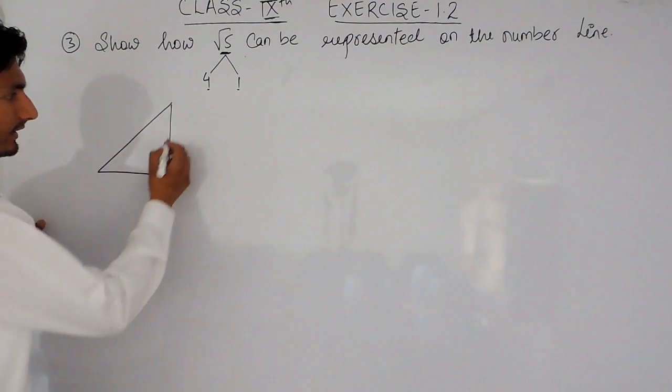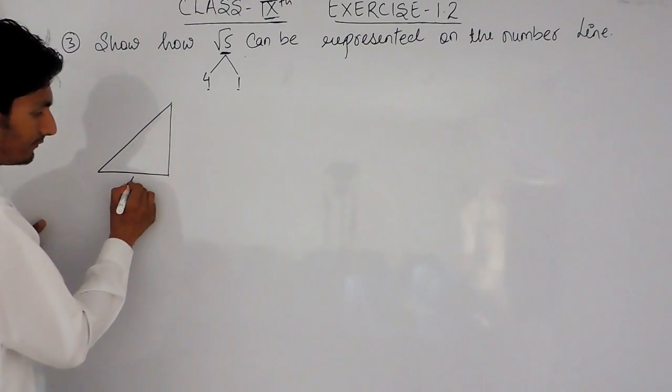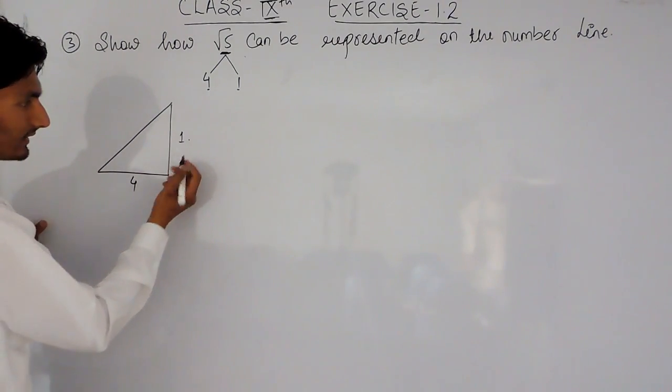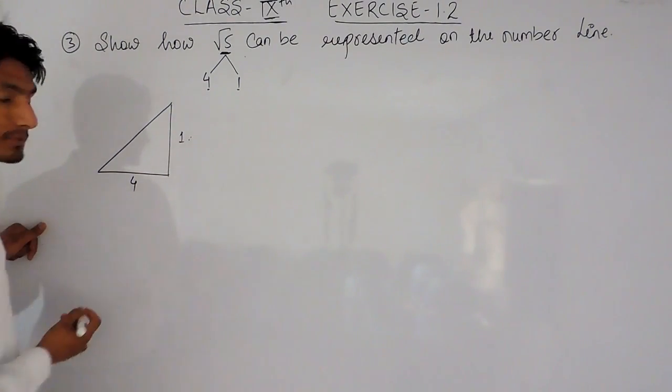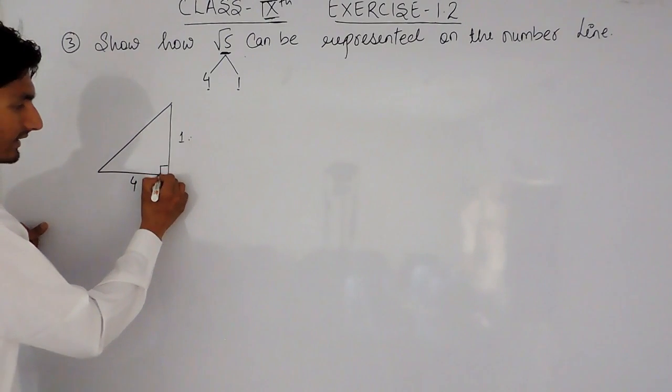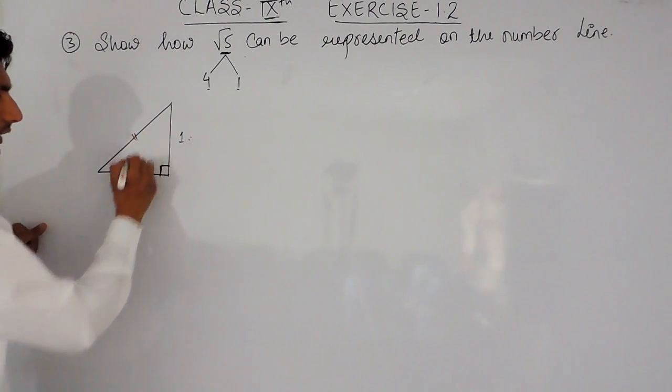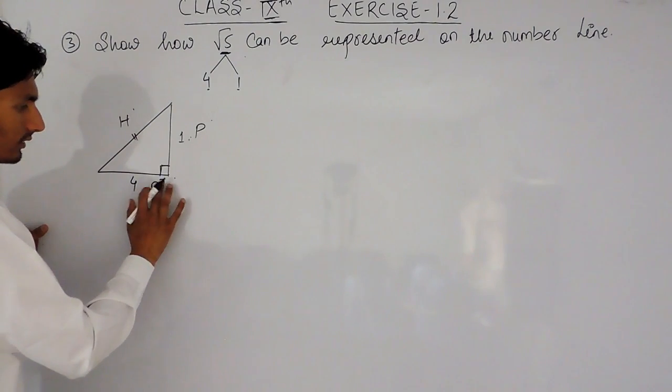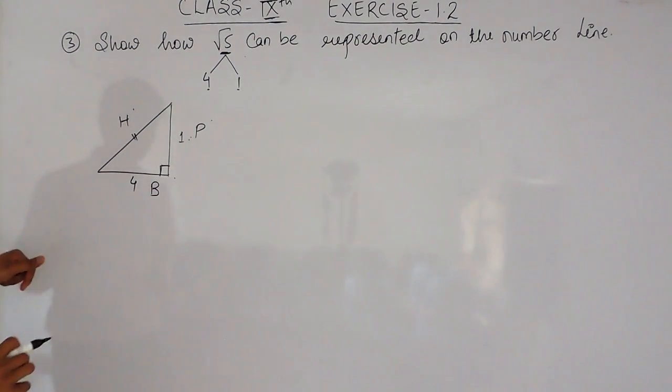Means, if I consider this as 4 and this as 1, and what is Pythagoras theorem? In a right-angled triangle, the square of this hypotenuse will be equal to the sum of square of perpendicular and base. So,